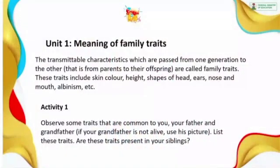Examples of family traits include skin color, height, shape of head, hair, nose, mouth, and albinism. For example, if your dad is dark in complexion and your mom is light in complexion, you can be dark because the characteristic of being dark was transmitted from your dad to you.